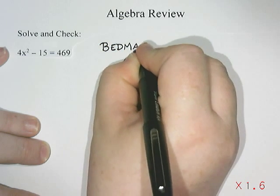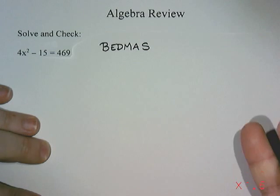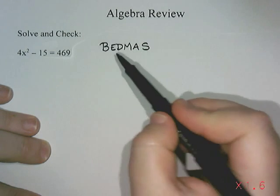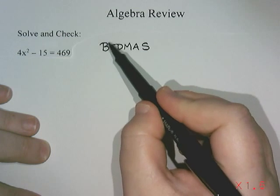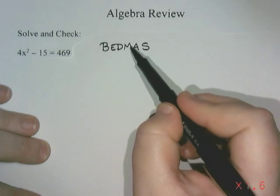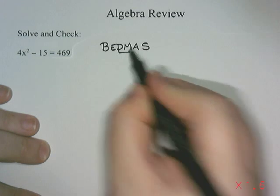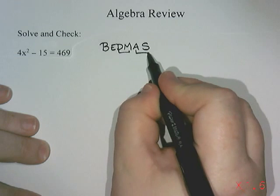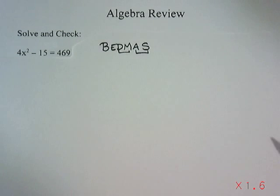When you're evaluating a question with numbers to work out, you start by doing any brackets, then exponents, then division and multiplication — working left to right — and addition and subtraction the same way, just working left to right.